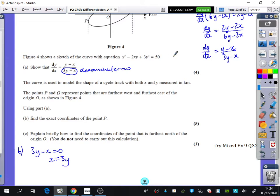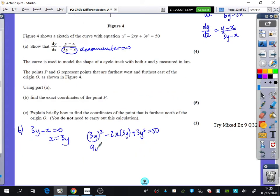So I'm just going to sub straight in here. So that's going to be 3y squared minus 2xy plus 3y squared equals 50. So 9y squared, I think I've written something wrong there, haven't I? It should have said 2xy like that, minus 6y squared plus 3y squared equals 50. So that's 6y squared equals 50.